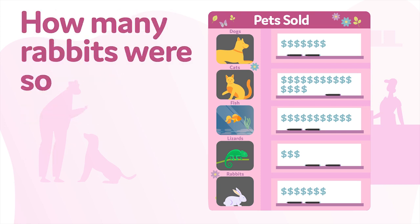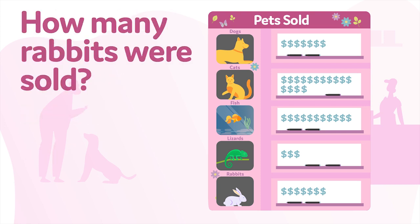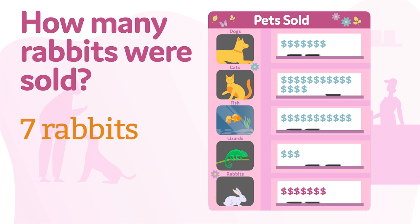How many rabbits were sold? To answer this question, you must count the number of dollar signs in the rabbit row: one, two, three, four, five, six, seven. Each picture equals one animal, so seven rabbits were sold altogether.